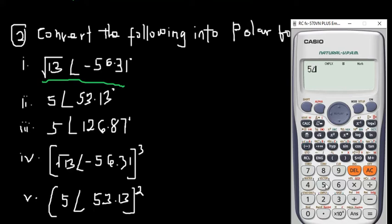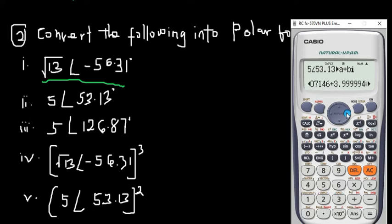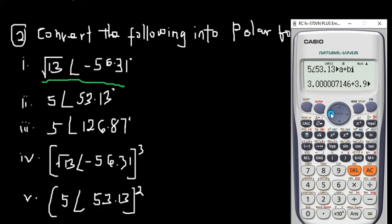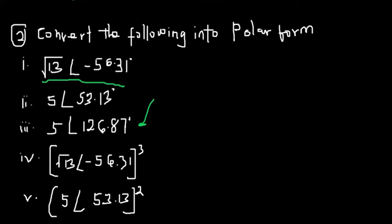Second example: 5 at angle 53.13 degrees. Enter 5, Shift angle, 53.13. Click Shift, complex, choose option 4. You end up with positive 3 and positive 4i — just rounding 3.99 to the nearest whole number. So the answer is 3 plus 4i.